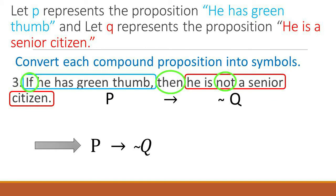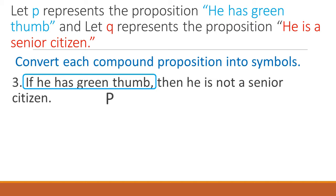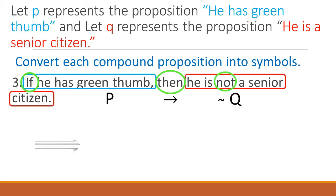If he has green thumb then he is not a senior citizen. We need to convert he has green thumb with letter P and he is senior citizen with letter Q. The word 'if then' was used so we change it with an arrow symbol. Since we have the word 'not' in Q, then we negate it. Great. P arrow negate Q.